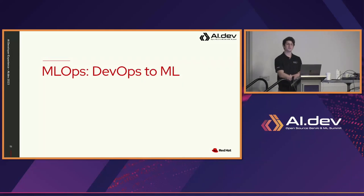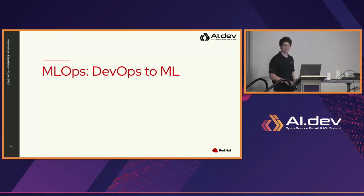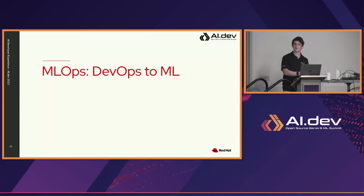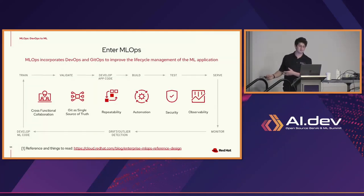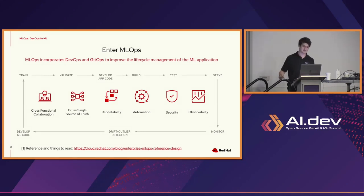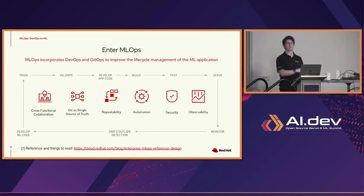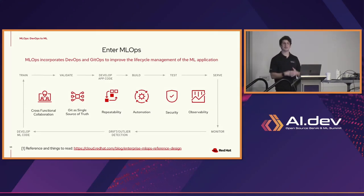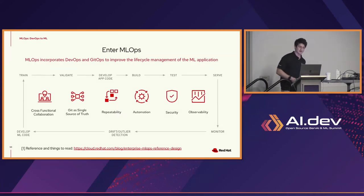We've talked about the struggles of putting a model into production and the difficulties of creating a platform. I want to talk about ML operations because that's how we're automating all the problems we've had up until now, all the way from development to production. The main idea behind MLOps — a newly formed operational concept — is that we should be able to do all of this without it being painful and risky. It's about bringing collaboration together across all the different personas: data scientists, developers, building on top of DevOps and GitOps, but in an AI/ML perspective.